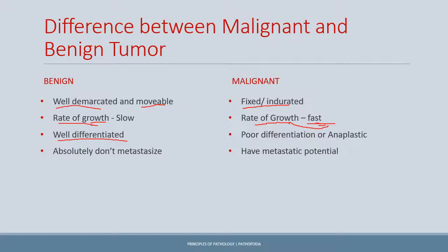The third point is that benign tumors are well differentiated. Histologically, many times benign tumors cannot be differentiated from the normal tissue parenchyma. Malignant tumors, in contrast, are usually poorly differentiated, and this principle is also important in the grading of tumors — the more poorly differentiated a tumor is, the worse the prognosis.